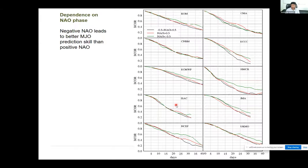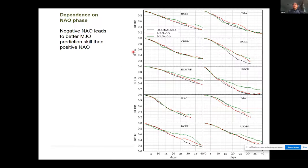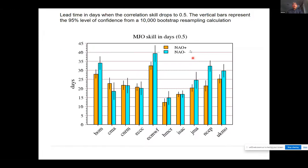There is also dependence on NAO phase. Comparing forecasts starting with positive NAO versus negative NAO, the conclusion is that when you start the forecast with negative NAO (the green line), for most models you get better forecast skill of the MJO. The negative NAO leads to better skill of the MJO.